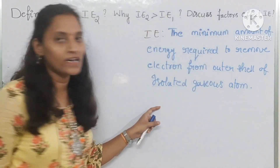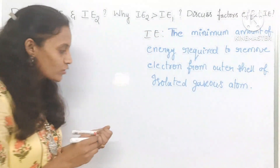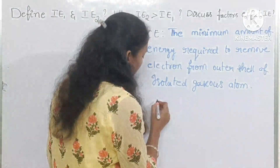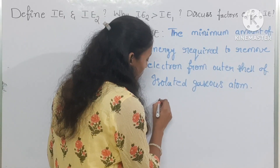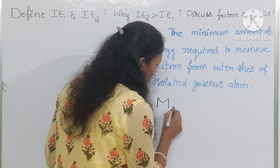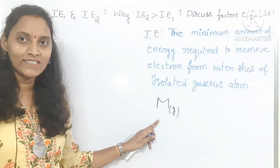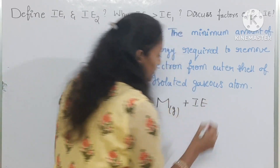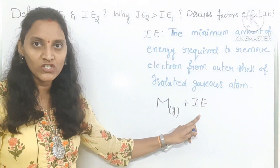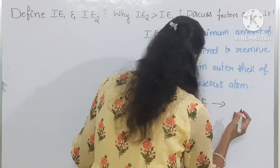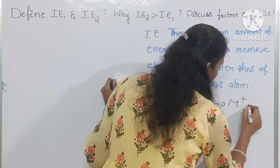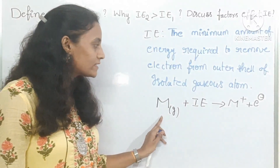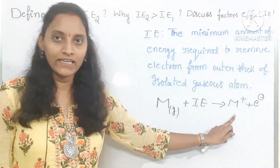The amount of energy required to remove an electron from the outer shell of an isolated gaseous atom is known as ionization energy. If you take M as the isolated gaseous atom and provide ionization enthalpy, then M becomes M⁺ by losing one electron. The neutral gaseous atom becomes a cation.